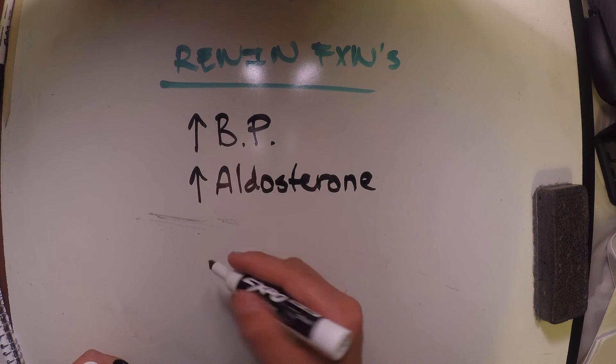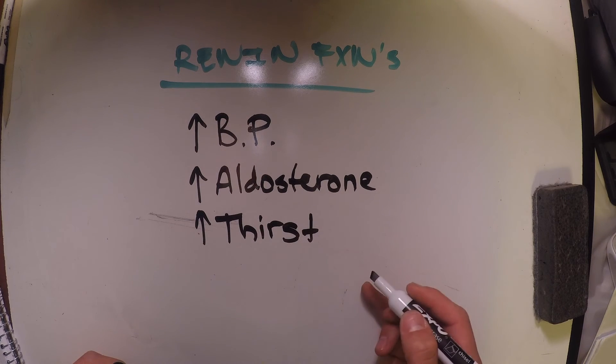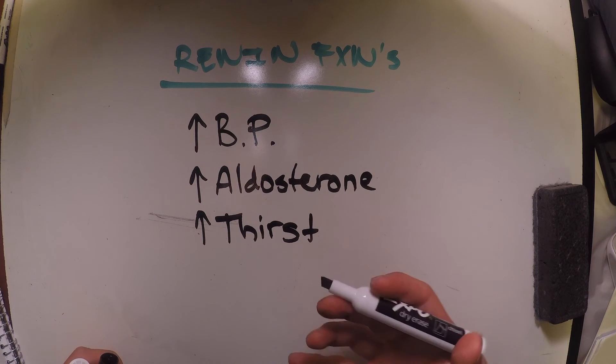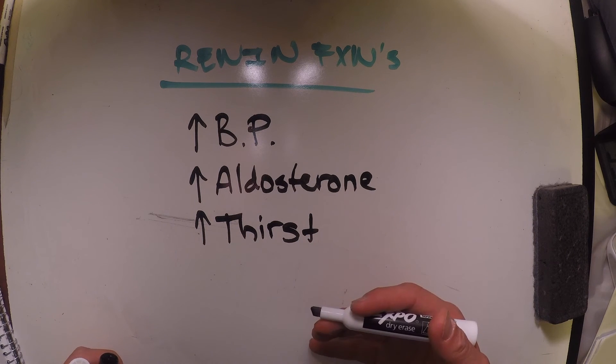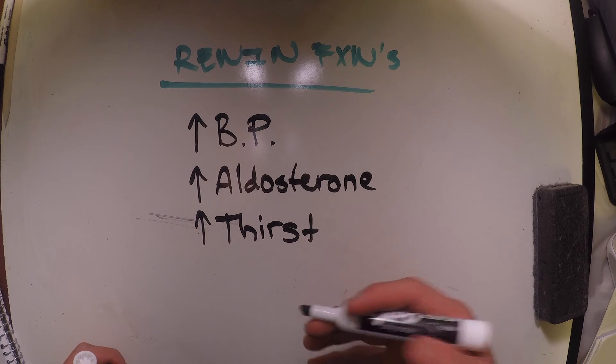And then the last function is it's going to increase our thirst. So renin is very important in regulating our hypotension or low blood pressure and ensuring that we increase this blood pressure.